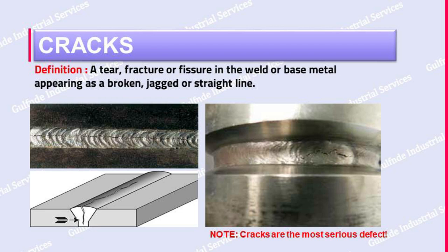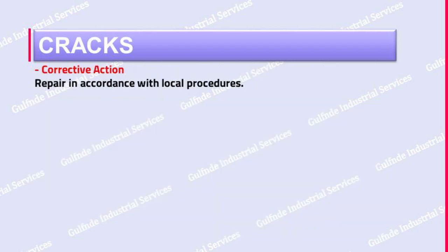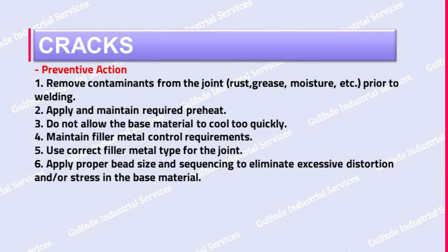Please note that cracks are the most serious defect. What is the corrective action for cracks? After found cracks, repair in accordance with local procedures. What are the preventive actions for cracks? One: remove contaminants from the joint — like rust, grease, moisture — prior to welding.